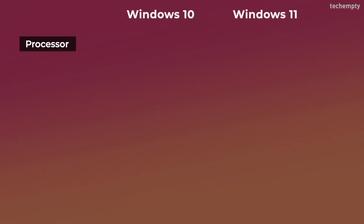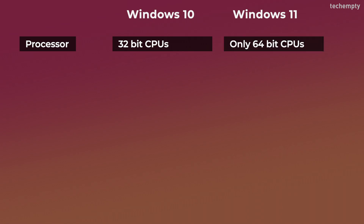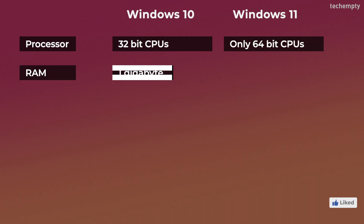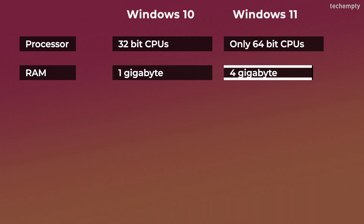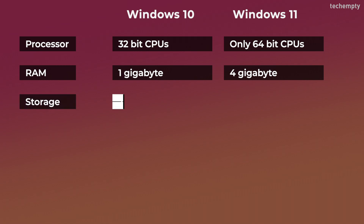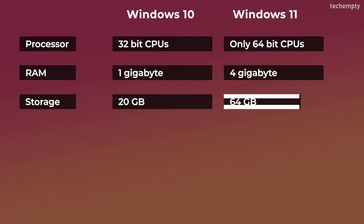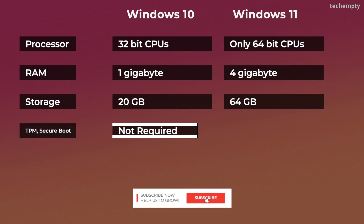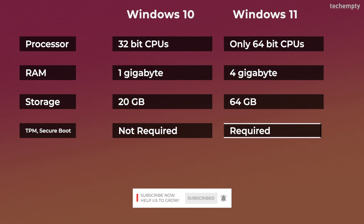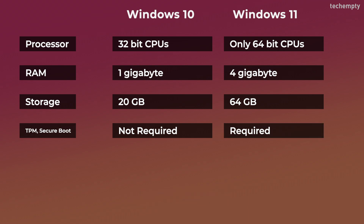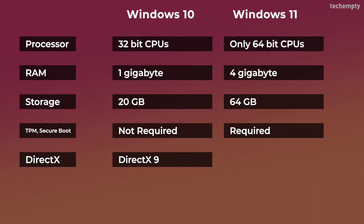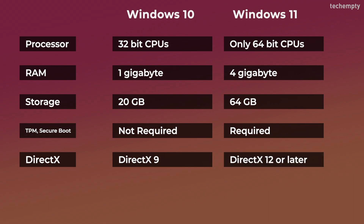So what's the difference between Windows 10 and 11 system requirements? In terms of processor, Windows 10 supports 32-bit CPUs while Windows 11 only supports 64-bit CPUs. Windows 10 requires 1GB of RAM while Windows 11 requires 4GB. Windows 10 requires 20GB of storage and Windows 11 requires 64GB. Unlike Windows 11, Windows 10 does not require UEFI secure boot or TPM by default — those are required only if you use some features like BitLocker. Also, Windows 10 requires DirectX 9 with WDDM 1.0 support while Windows 11 needs DirectX 12 or later with WDDM 2.0 support.